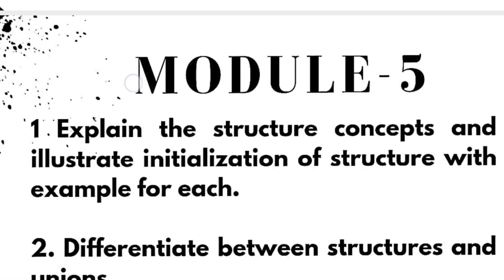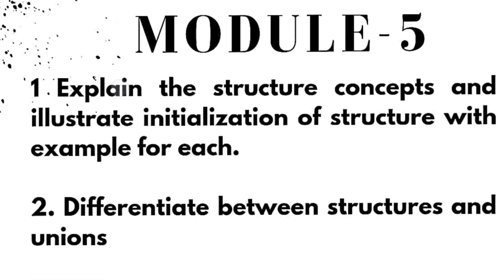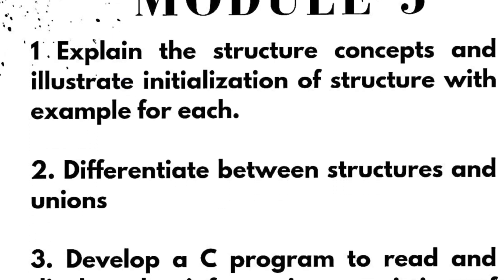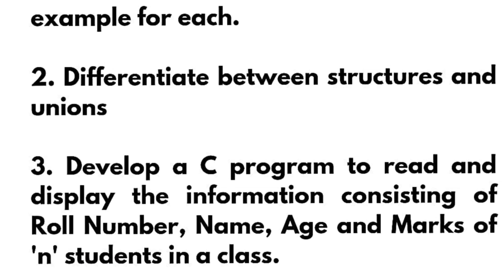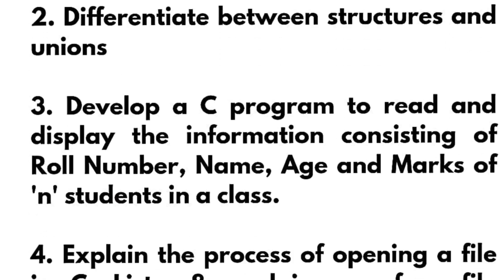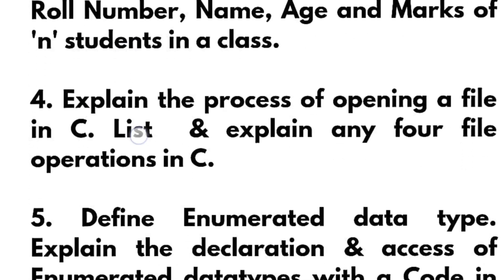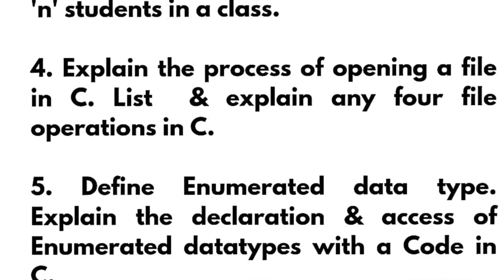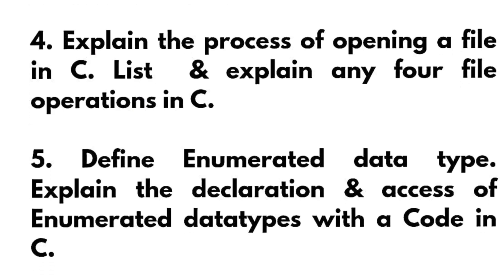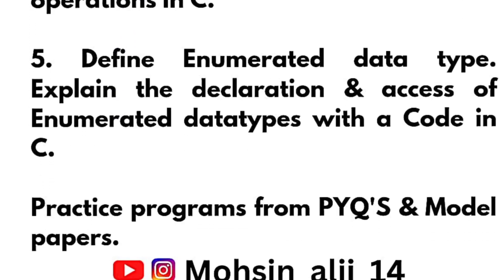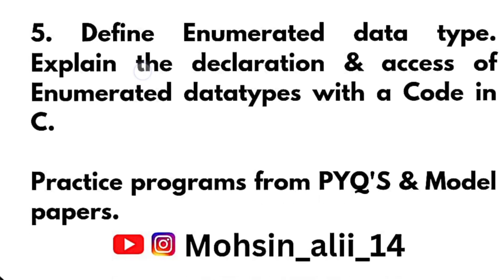Now we have the last module, module five. Explain the structure concepts and illustrate initialization of structure with an example, and differentiate between structures and unions. Develop a C program to read and display information consisting of roll number, name, age and marks of N students in a class. Explain the process of opening a file in C. List and explain any four file operations in C. Define enumerated data type and explain the declaration and access of enumerated data types with a code in C. Also practice programs from previous question papers and model papers if you are comfortable with the programmatic part.